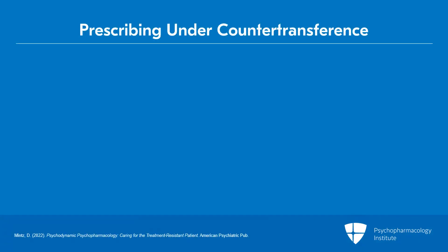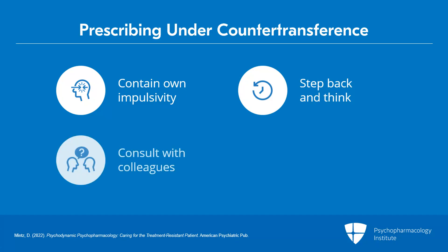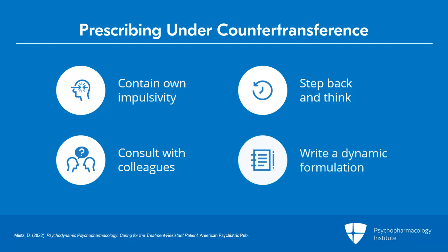The first thing we want to do in our prescribing is to contain impulsivity, but not of the patient, but of us. I like to really step back and think. One thing that's obviously very helpful with that is consultation with colleagues when you have difficult-to-treat patients. Another thing that you can do is a dynamic formulation, and I write one of these on every patient that I see that has a history of treatment resistance as they come in.